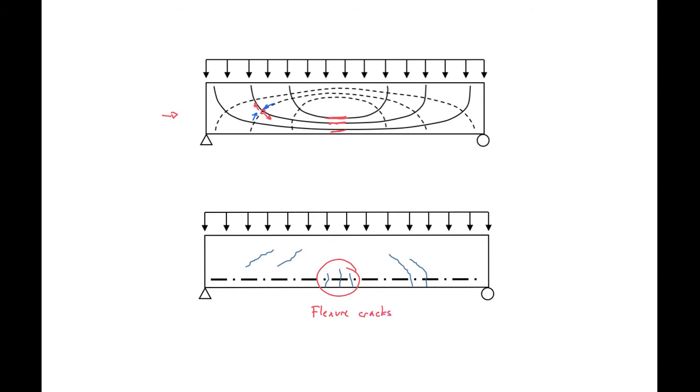As we move away from our centroid our tensile stresses start to curve upward. And what we'll have in this transition point is we'll have cracks that start as flexure cracks and then turn into shear cracks. So these cracks we call flexure-shear cracks.